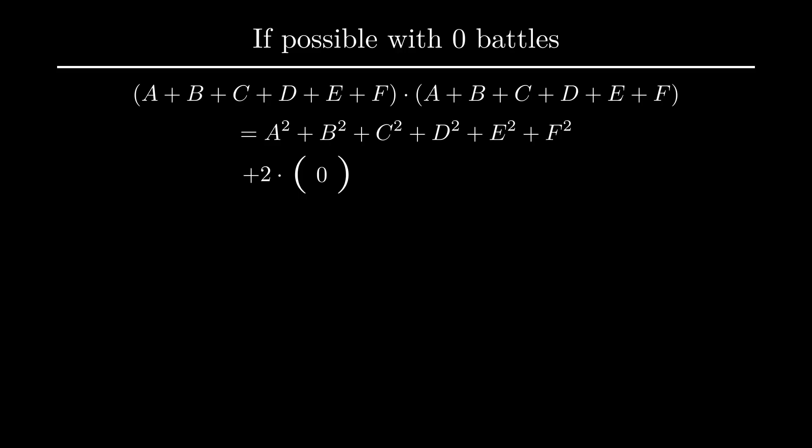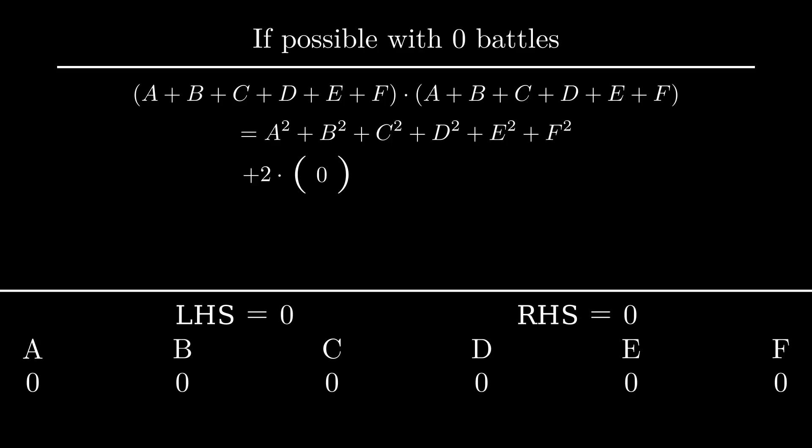The way we'll prove this is by giving values to A through F. Let's start with all 0s. With these values, the LHS and RHS are both 0. But now let's change the values so that none of them are 0s. Here the LHS still happens to be 0 because the sum of A through F, 3+1+4+1+5-14, is 0. But now the RHS is greater than 0 because it's the sum of squares of non-zero numbers. So the LHS is 0 but the RHS is not. This means that the LHS and RHS are not the same. And so the person was lying when they said that they can cover all the battles with 0 fights.